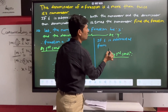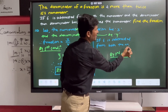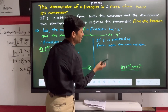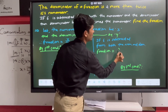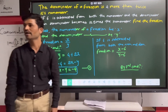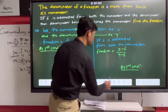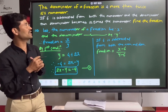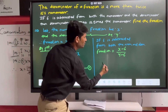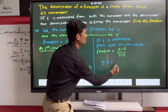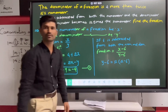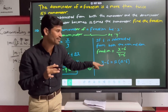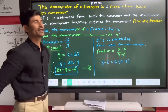If 6 is subtracted from both the numerator and denominator, then the fraction becomes X minus 6 upon Y minus 6. The actual condition states that the denominator becomes 12 times the numerator. So Y minus 6 becomes 12 times X minus 6.